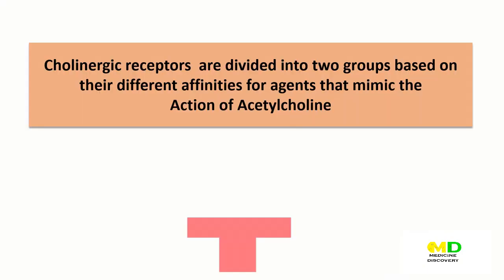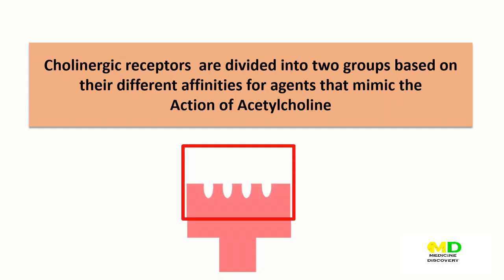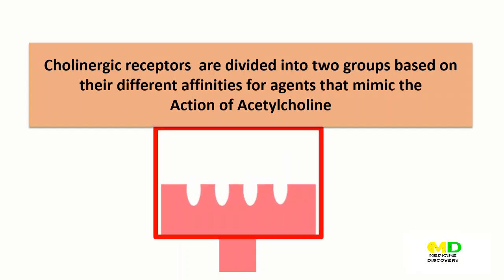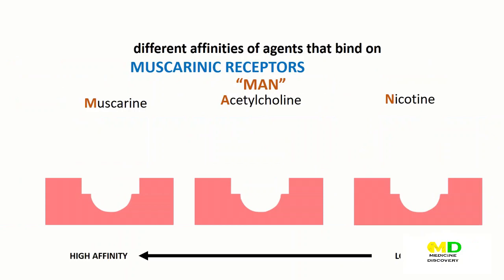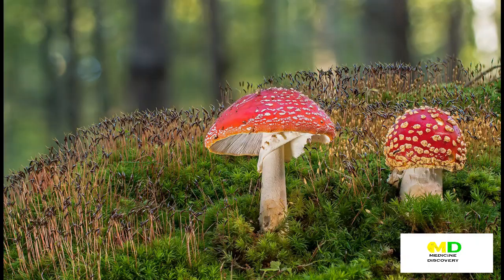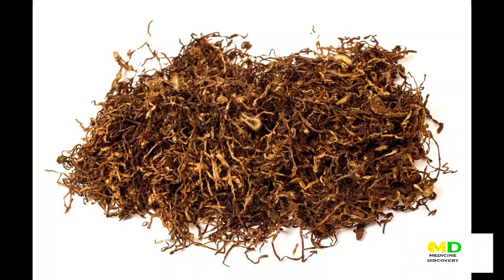Cholinergic receptors are divided into two groups based on their different affinities for agents that mimic the action of acetylcholine. Muscarinic receptors: these receptors, in addition to binding acetylcholine, also have a higher affinity for muscarine, an alkaloid in certain poisonous mushrooms, and they also show only a weak affinity for nicotine, an alkaloid found in tobacco and other plants. There are five subclasses of muscarinic receptors.